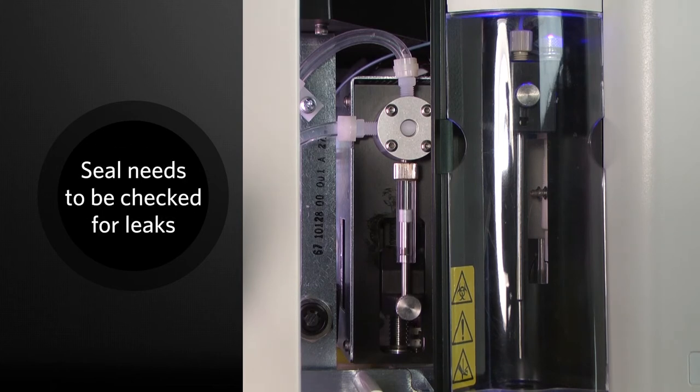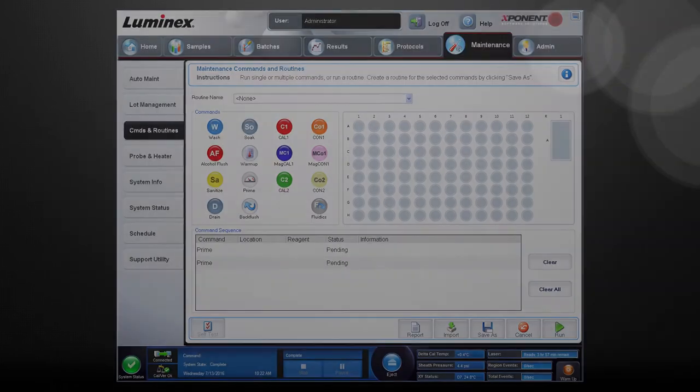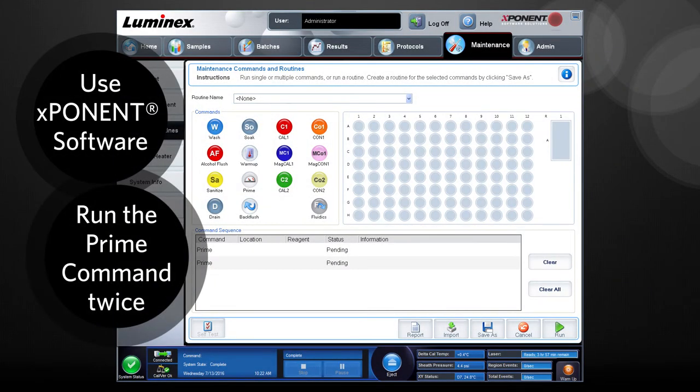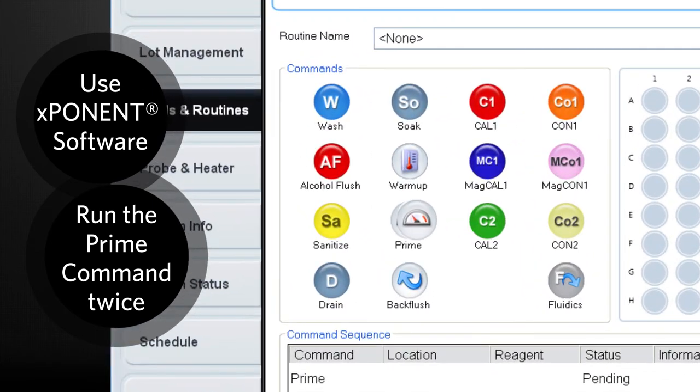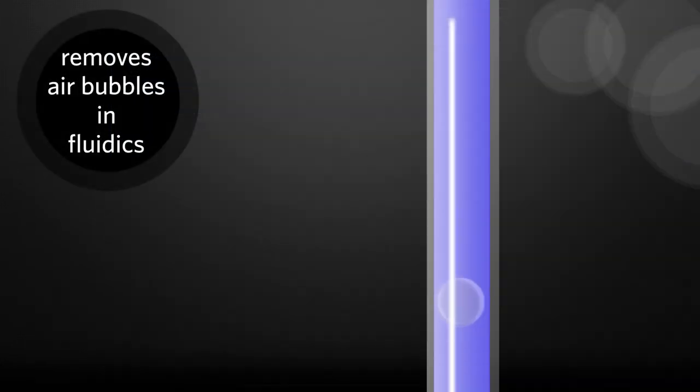Before using the instrument, the syringe seal needs to be checked for leaks. Using Exponent software, run the Prime command twice. This will remove any air bubbles in the fluidics lines.